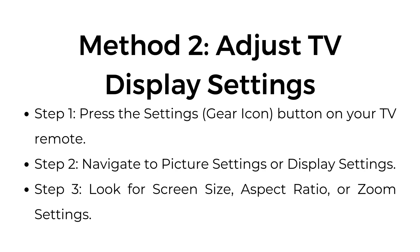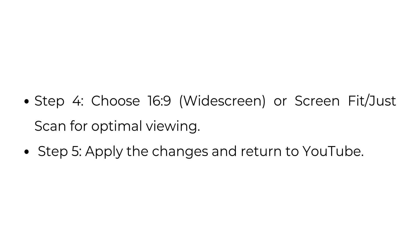Method two: Adjust TV display settings. Step one, press the settings gear icon button on your TV remote. Step two, navigate to picture settings or display settings. Step three, look for screen size, aspect ratio, or zoom settings. Step four, choose 16 by 9, screen fit, or just scan for optimal viewing. Step five, apply the changes and return to YouTube.